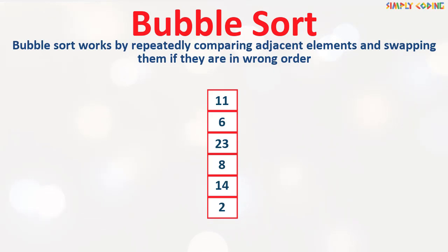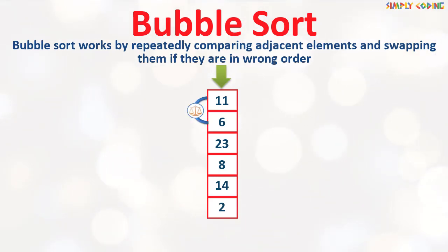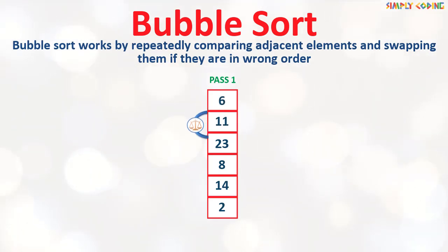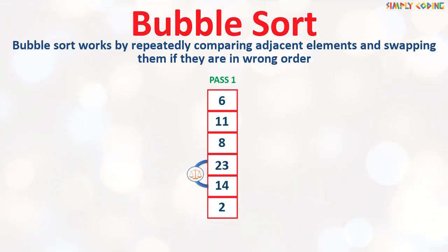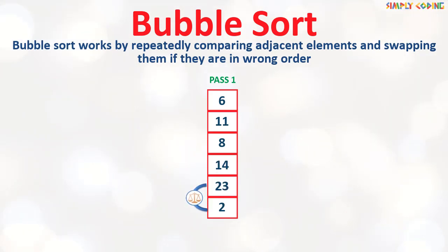Let's see by taking an example list of unsorted numbers. The algorithm starts from the top and compares the first element with the second. Since 6 is smaller it swaps the two elements. It then checks the second and the third element — second is smaller so it does not do anything. Then 8 is smaller so it moves 8 up and 23 moves down. Then 14 is smaller so it swaps and 23 moves down. Next, 2 is smaller so it bubbles up and 23 moves down. This is called one complete pass.